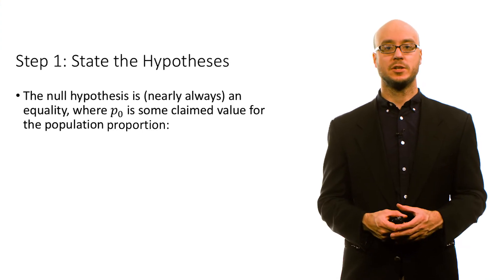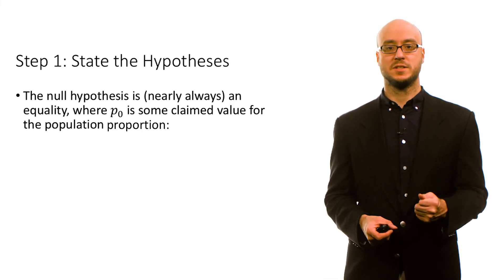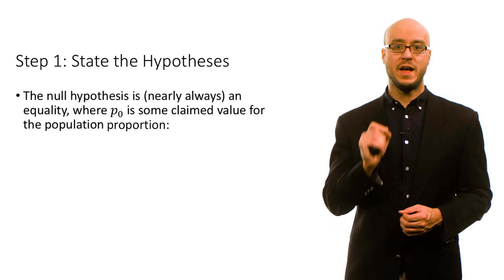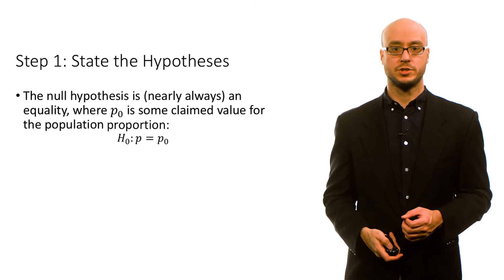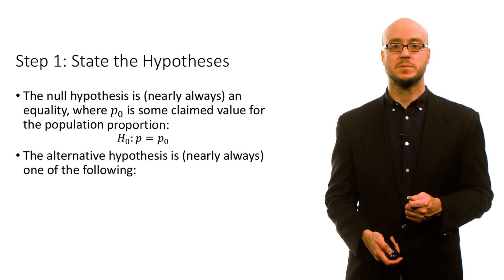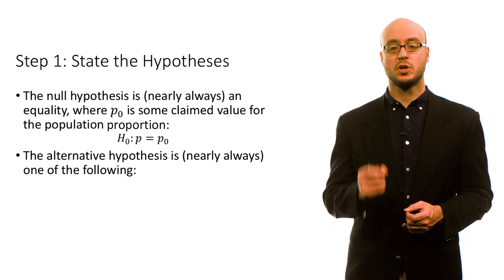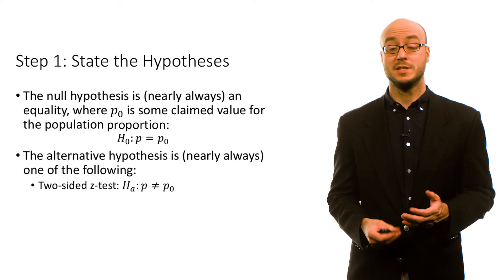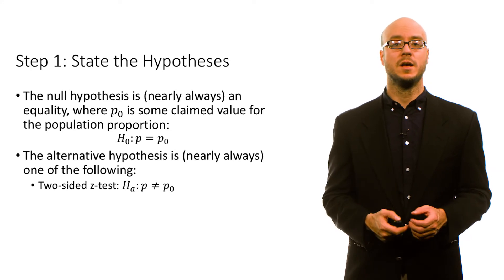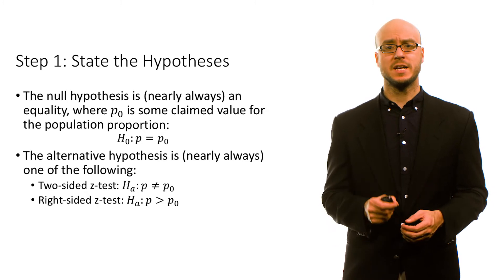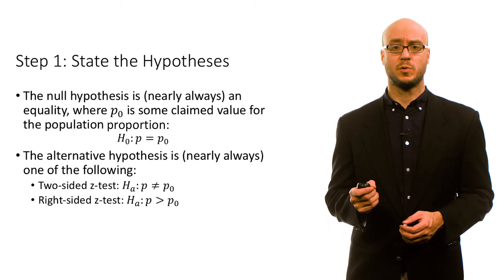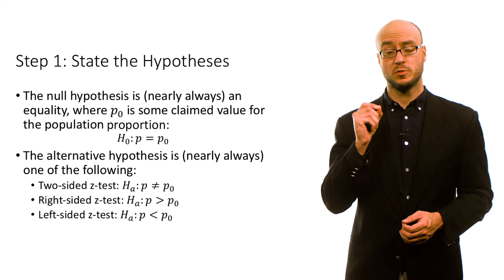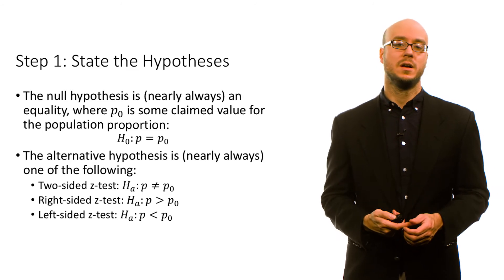Step one: state the hypotheses. The null hypothesis is almost always an equality, and we use p₀ to refer to the claimed value for the population proportion. So the null is that p equals p₀. The alternative hypothesis is almost always one of three options: for a two-sided z-test, the alternative is that the population proportion does not equal p₀; for a right-sided z-test, the population proportion is greater than p₀; and for a left-sided test, the population proportion is less than p₀.